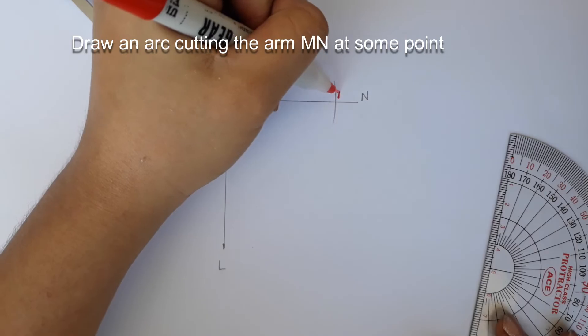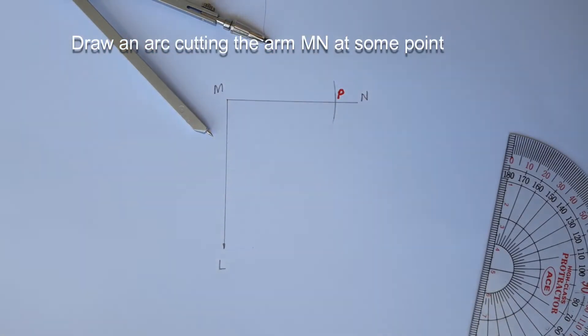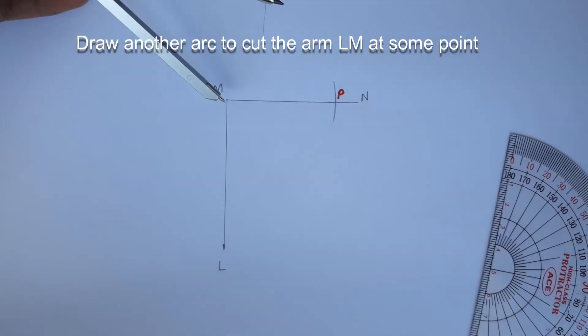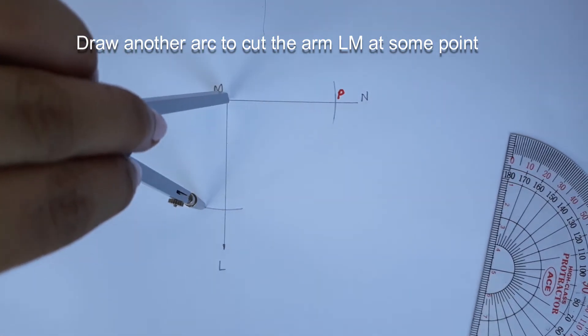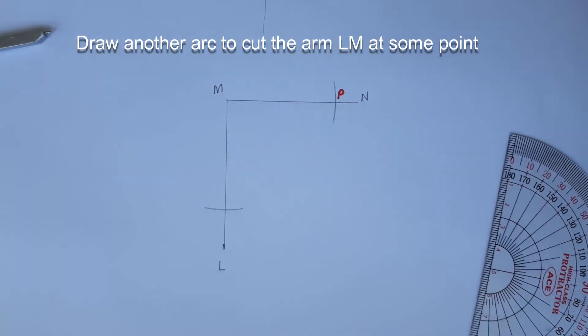Then draw an arc cutting the arm MN at some point, let's say P, and then draw another arc to cut the arm LM at some point, let's say Q.